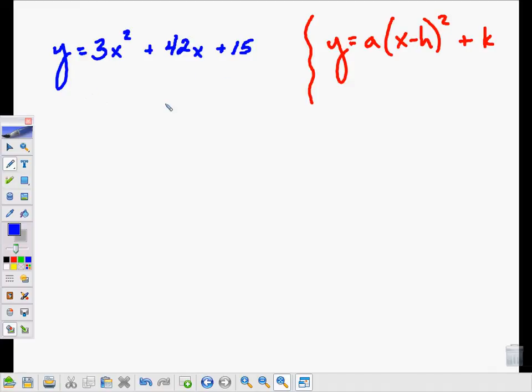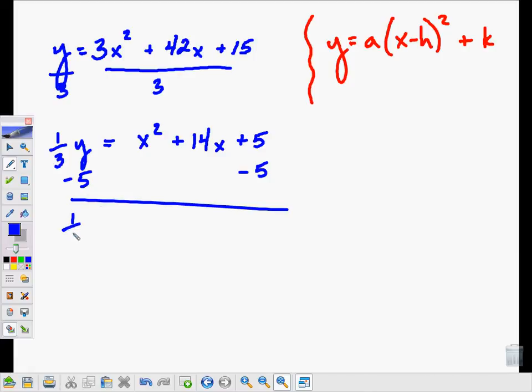This all begins with getting a leading coefficient equal to 1. Right now it is 3, so I will divide both sides of my equation by 3. That leaves me with 1 third y on the left, and on the right I've got x squared plus 14x plus 5. Now I'm going to get rid of this c term since I do not have a perfect square on the right. I'll subtract the 5 from both sides. It's not really going anywhere, I just want it out of my way.